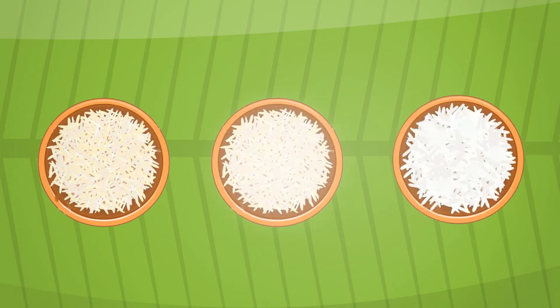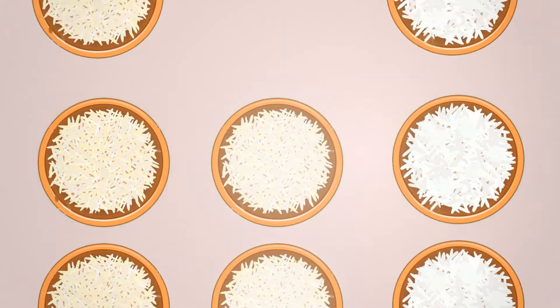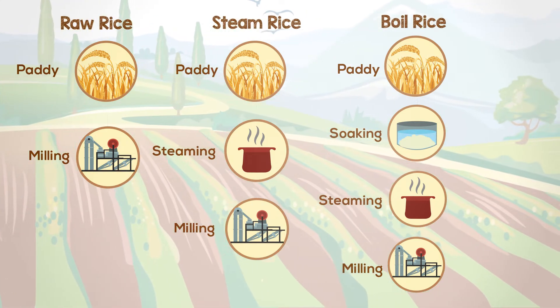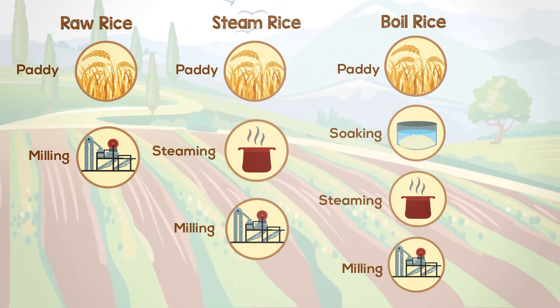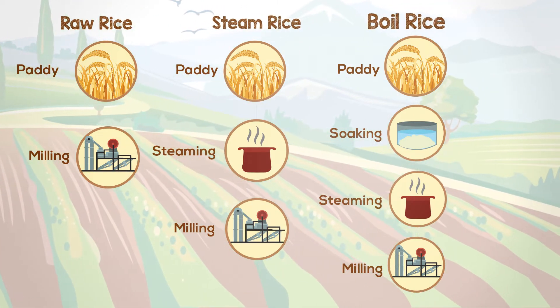Popular varieties of rice like basmati and sona masuri are processed by any one of these methods to produce raw rice, steamed rice or boiled rice.